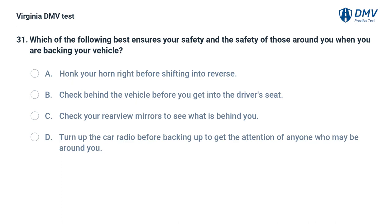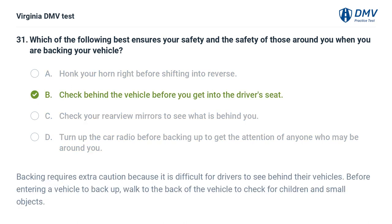Which of the following best ensures your safety and the safety of those around you when you are backing your vehicle? A. Honk your horn right before shifting into reverse, B. Check behind the vehicle before you get into the driver's seat, C. Check your rearview mirrors to see what is behind you, D. Turn up the car radio before backing up to get the attention of anyone who may be around you. The correct answer is B. Backing requires extra caution because it is difficult for drivers to see behind their vehicles. Before entering a vehicle to back up, walk to the back of the vehicle to check for children and small objects.